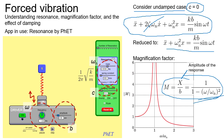From the magnification factor equation, we can plot the graph of M versus the ratio of omega to omega_n. This graph is very important in vibration theory because it lets us understand how much the amplitude of the response will be magnified depending on the ratio of the driving frequency to the natural frequency.